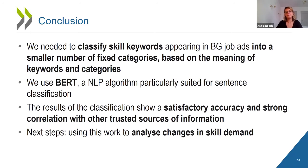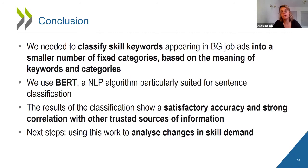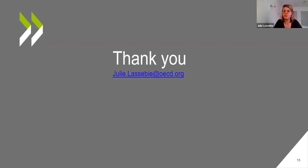To wrap up: we wanted to classify skill keywords from the Burning Glass database into a smaller number of categories based on the meaning of the keywords and the categories. For this we use BERT, a natural language processing algorithm particularly suited for sentence classification. The results show satisfactory accuracy and a strong correlation with other trusted sources of information. Next steps include using this classification to analyze changes in skill demand, which is forthcoming work at the OECD.